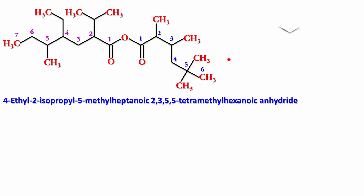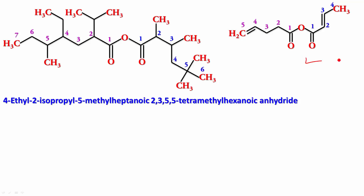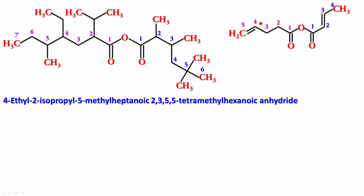Try naming one more — pause now. Counting the carbons: on one side 1, 2, 3, 4 (four carbons, so 'but-'), on the other side 1, 2, 3, 4, 5 (five carbons, so 'pent-'). There are no substituents, so with double bonds indicated by their positions: this is but-2-enoic pent-4-enoic anhydride.